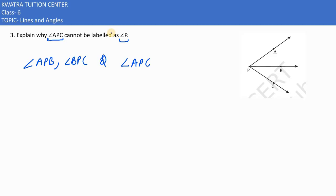So that is why angle APC cannot be labelled as angle P, because angle P consists of more than one angle. You can mention here that angle P are more than one angle. Therefore we cannot mention angle APC as single angle P.